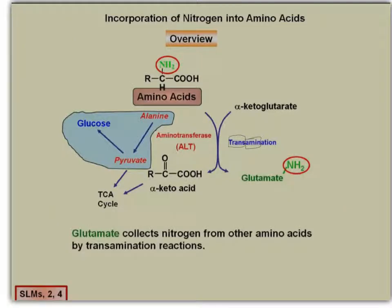In this example, alanine transfers its amine group to alpha-ketoglutarate using ALT — alanine aminotransferase, sometimes called alanine transaminase. Many of these enzymes have multiple names, and knowing them makes it easy to figure out what the enzyme does. It's important to note that alanine isn't the only amino acid that can undergo transamination; any amino acid can, with glutamate being the ultimate carrier of the nitrogenous group.